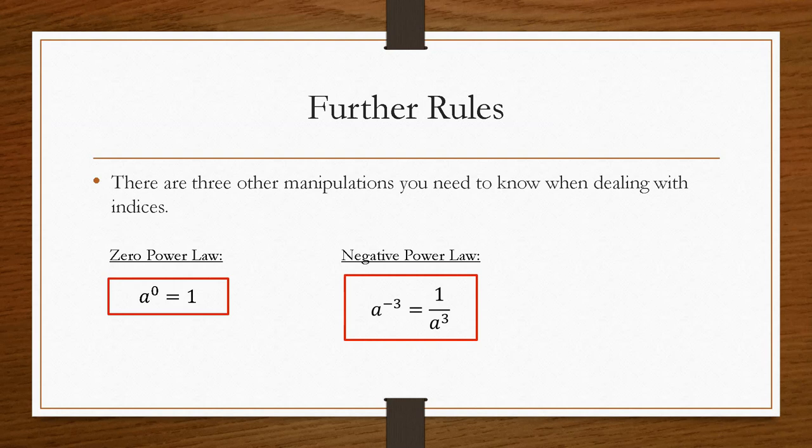Then you have what's called the negative power law. A lot of the time, the questions like to ask for your final answer as a positive power. Now, the way that you do that is you have to do 1 over the power. So 1 over this entire thing, i.e. you take the inverse of this, because the inverse is 1 over. So it becomes 1 over, and then the power becomes positive. So it's 1 over a to the power positive 3.